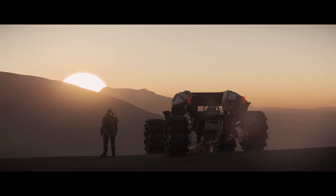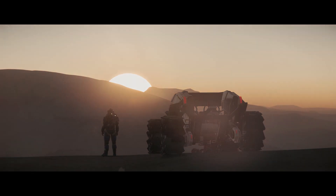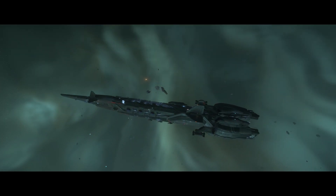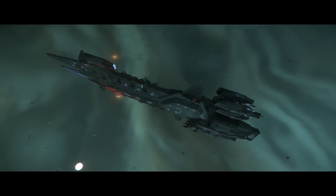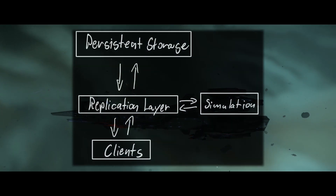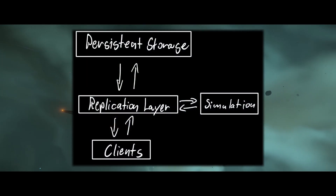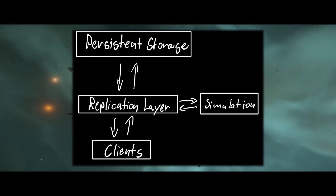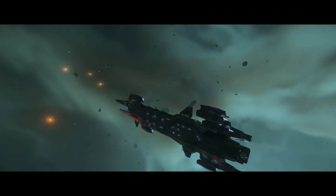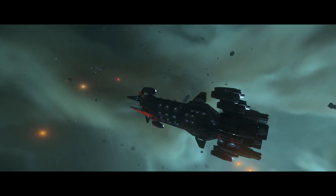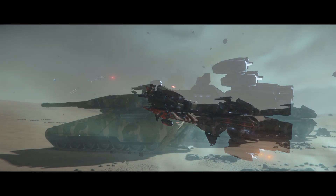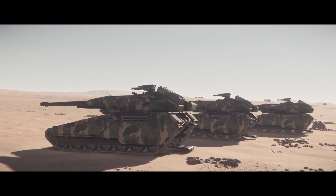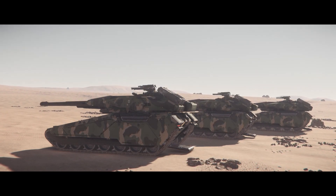As far as we know, the entity authority system is mostly complete at the moment. The next step will be the replication layer and persistent storage. The replication layer is there to propagate state between individual server nodes and the client. It also handles streaming entities in and out of the game instance, which decreases the load on the simulation servers and decreases their complexity by moving the required code into a separate service.